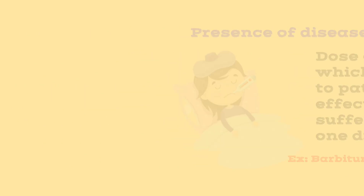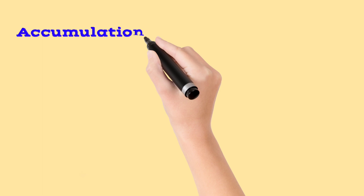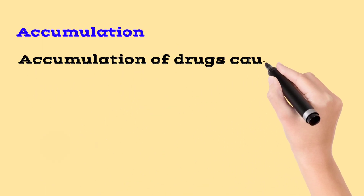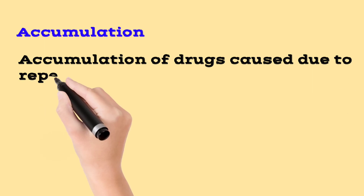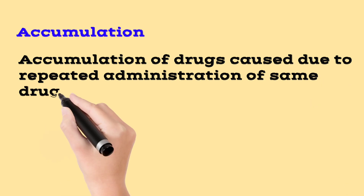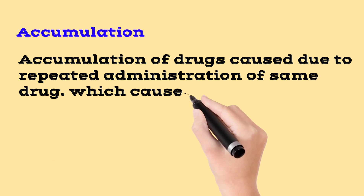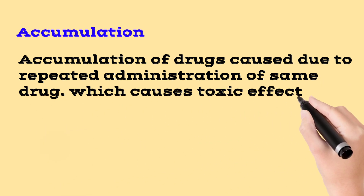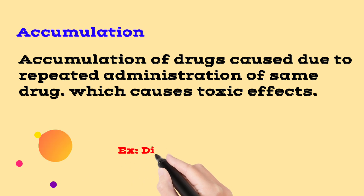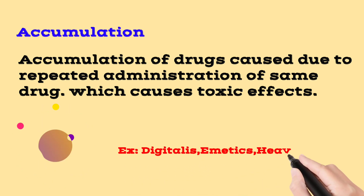The next factor is accumulation. If a particular dose of a drug is administered repeatedly, it accumulates in the body and has toxic effects. For example, if a drug is administered repeatedly, accumulation increases toxicity. Examples of drugs with accumulation concern include digitalis, heavy metals, and similar substances.